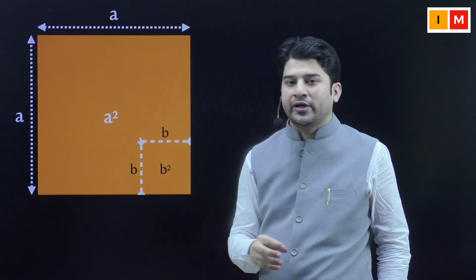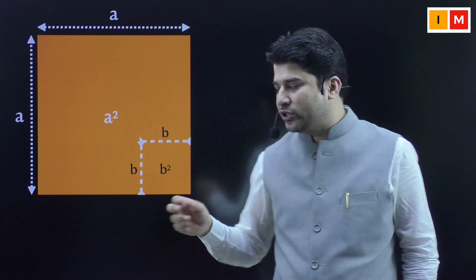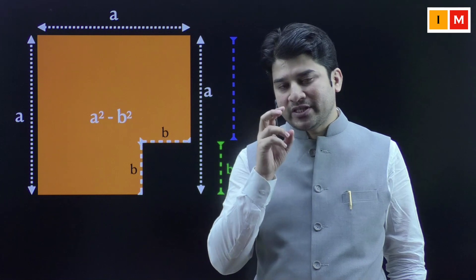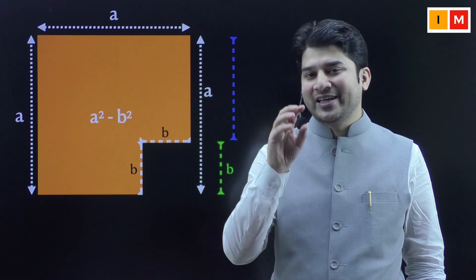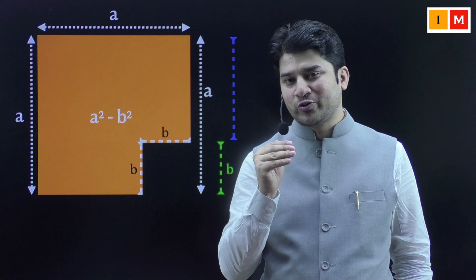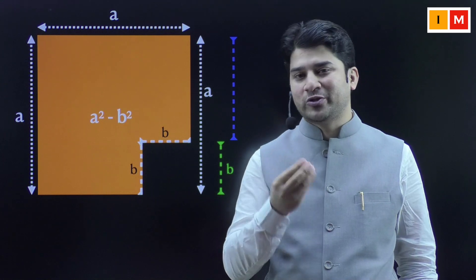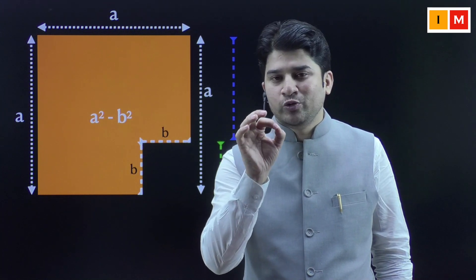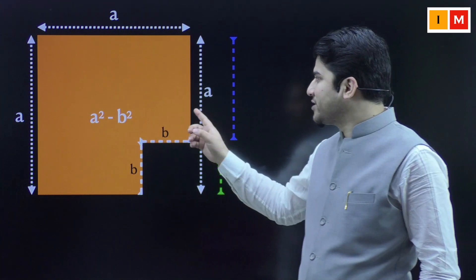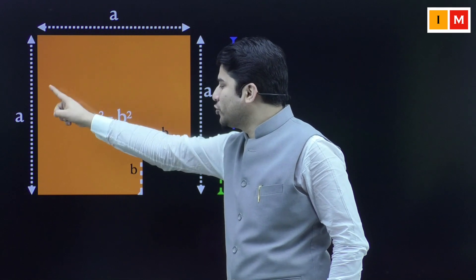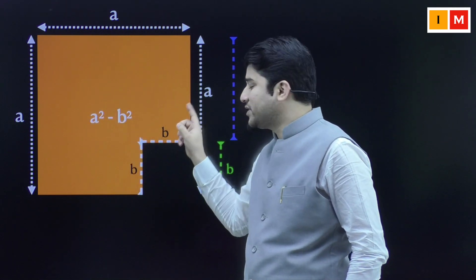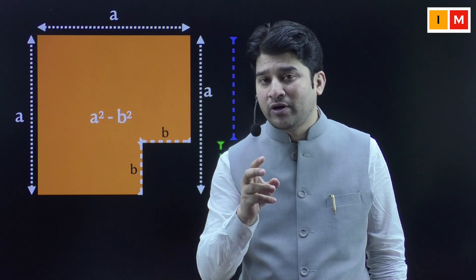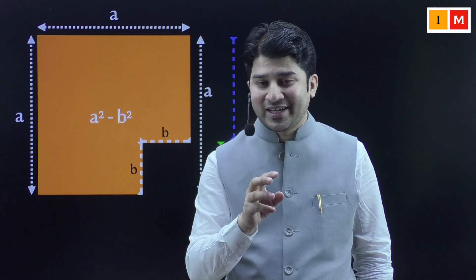Now I want you to cut this smaller square off from the bigger square and look at the remaining portion. If I ask you what is the area of this new shape, you are going to call it a² minus b² — that is the area of the big square minus the area of the smaller square, because the smaller square has been taken away. This new shape is a closed figure with six sides — a polygon with six sides, which we call a hexagon.